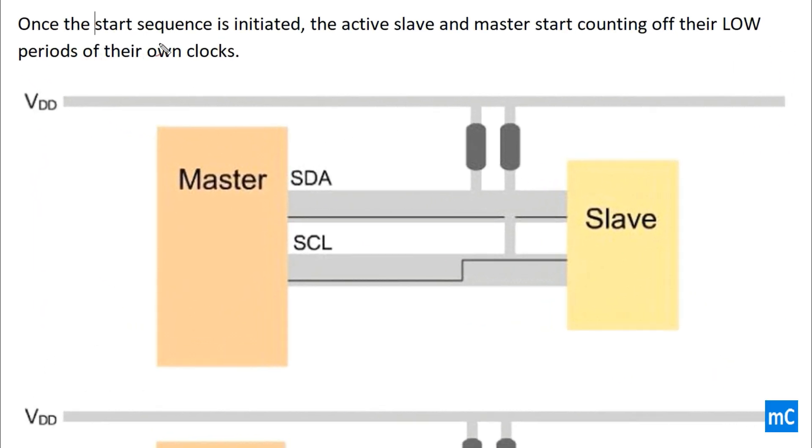Once the start sequence is initiated by the master, the active slave and master start cutting off their low periods of their own clocks. Here we can see the SDA line and SCL line. Here it is low and then here it is high.